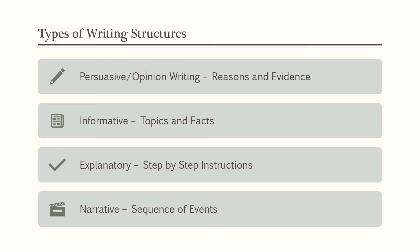Explanatory texts are also informative, but these are how-to texts — step-by-step instructions, like how to build a radio. So informative and explanatory go together in W.2. And then W.3 is narrative writing — a sequence of events. These are story pieces where you have a main character, a problem, a sequence of events, and then a conclusion, organized by time.